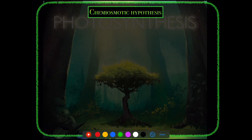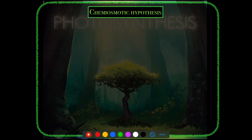Next is an advanced topic: the chemiosmotic hypothesis, proposed by Peter Mitchell. Similar to the proton gradient concept in respiratory ETS of mitochondria, a proton gradient also develops across the thylakoid membrane in chloroplasts, leading to ATP production. Understanding non-cyclic photophosphorylation in detail is essential before proceeding.